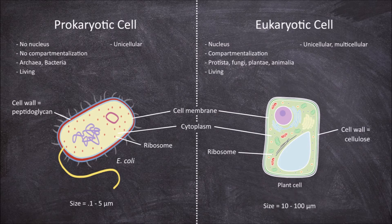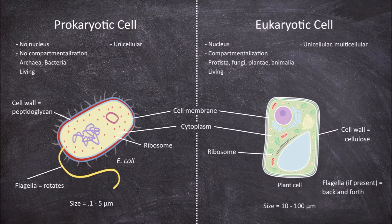Flagella are found in some prokaryotes as well as some eukaryotic cells, but the action of movement between the two groups differs. In prokaryotes the flagella rotates, whereas in eukaryotes that have a flagella they move back and forth laterally.